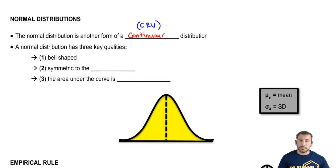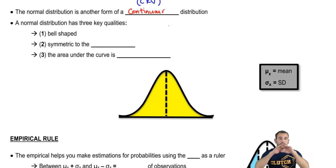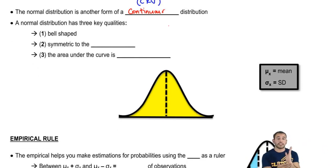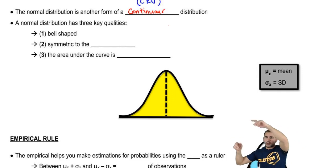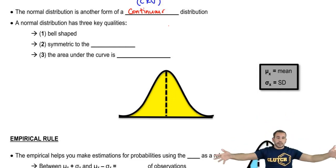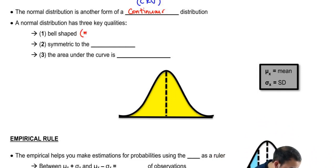A normal distribution has three particular qualities. We saw continuous distributions with equally distributed probabilities, where every outcome had equal probability of happening. For the normal distribution it's not equal — in particular it's bell-shaped, or as some professors and books may call it, mound-shaped.